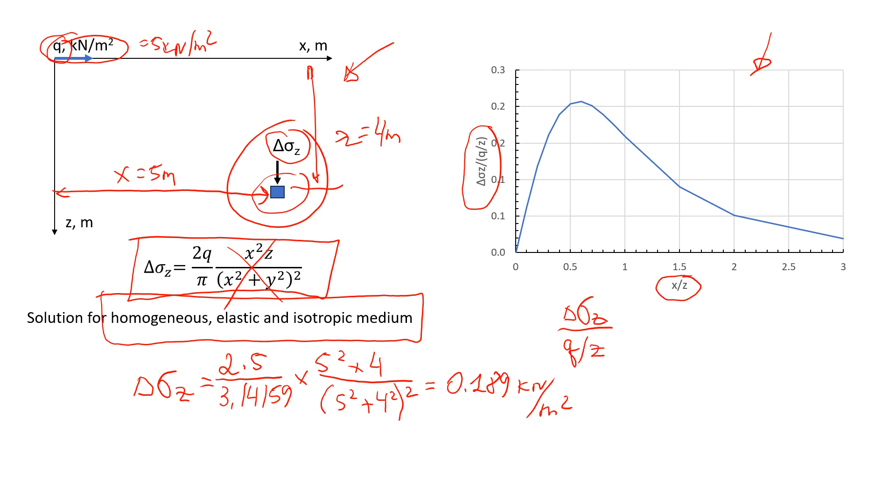So first, we need to calculate x over z. So x is 5 meters, z is 4 meters. It's going to give us 1.25. So now we're going to see where we have 1.25. It will be this point. And then see where it's on the curve. Somewhere here in the middle.